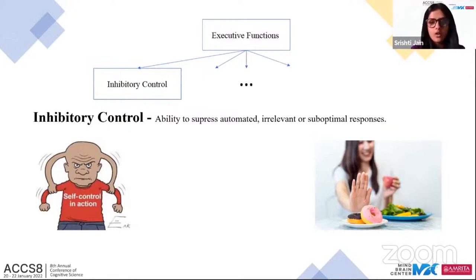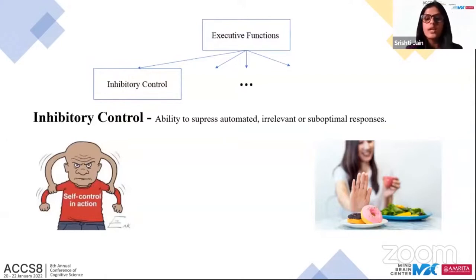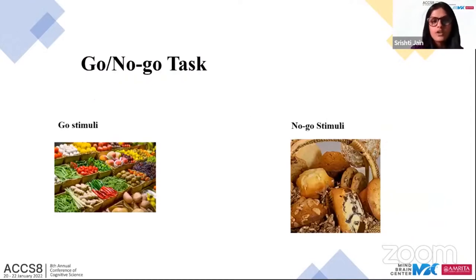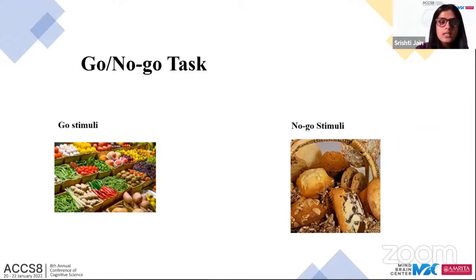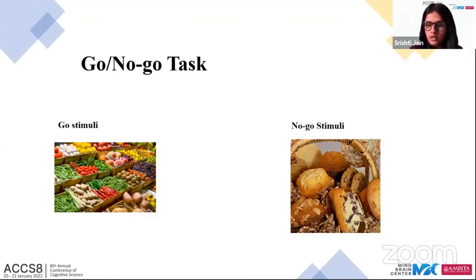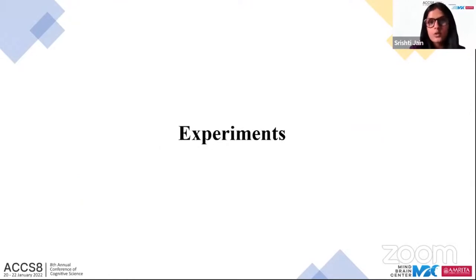Another day-to-day example: someone on a diet will suppress the urge to eat sugar or processed food. To study voluntary and inhibitory control in humans, the go/no-go task is commonly used. This task has two types of stimuli: a go stimulus, where you respond, and a no-go stimulus, where you suppress your action. We have modified this task using numerosity judgment.